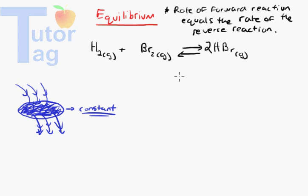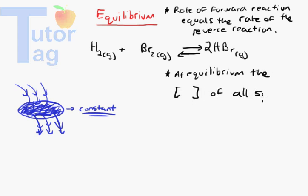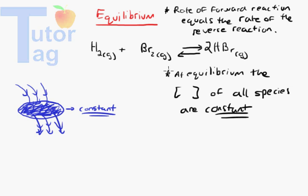That can be related to this chemical reaction. At equilibrium, the concentrations of all species are constant. They're not the same as each other, but they're constant. The HBr might have a different concentration than the Br₂, but they're all constant — HBr is not changing anymore, because the rate of the forward reaction equals the rate of the reverse reaction, just like the incoming and outgoing water keeping the water level constant.